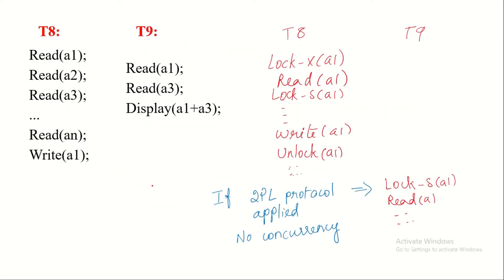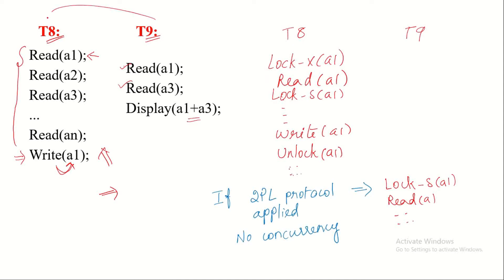Now let us discuss the lock conversion concept and why we need it. Consider transactions T8 and T9. T8 reads data items A1, A2, A3, ..., An and finally performs a write operation on A1. T9 wants to read A1 and A3 and display the result of A1 plus A3. If we apply two-phase locking protocol, T8 must acquire an exclusive lock on A1 at the start because it performs both read and write on A1.